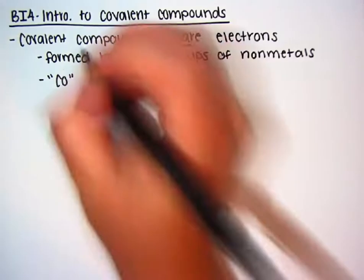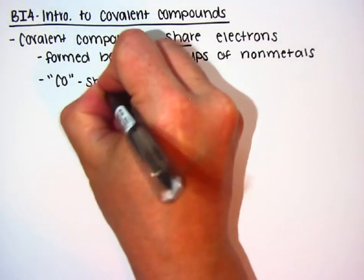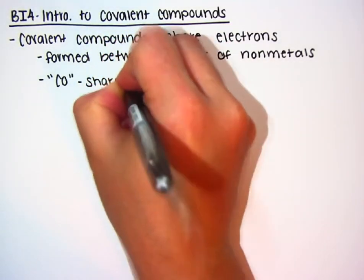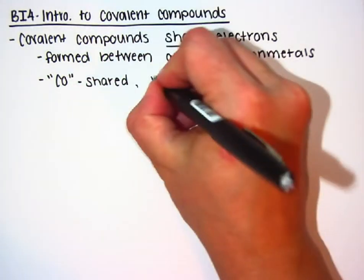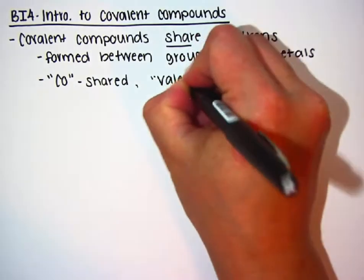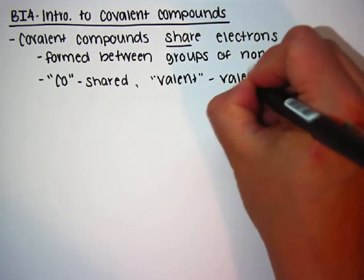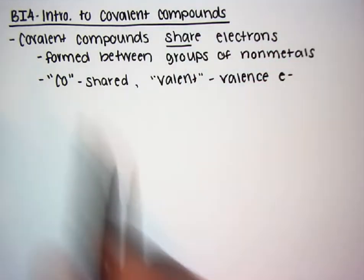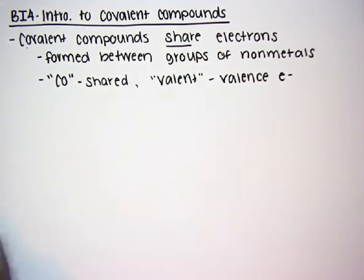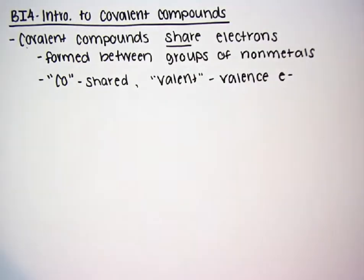The prefix co- means shared. Like if you're a co-captain, you share those responsibilities with someone else. And valent is for valence electrons. So when we say covalent, we literally mean shared valence electrons. Covalent compounds share valence electrons.